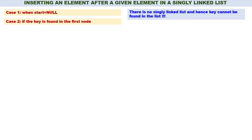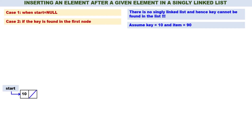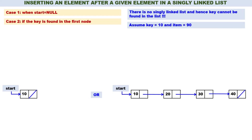Case two: if the key is found in the first node. Let us assume key is equal to 10 and item is equal to 90, meaning we have to search for 10 in the linked list. When the key is found in the first node, after 10 we have to insert 90. This applies whether there is only one node or many nodes, as long as the key is in the first node.